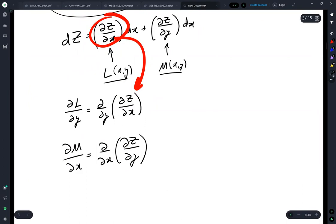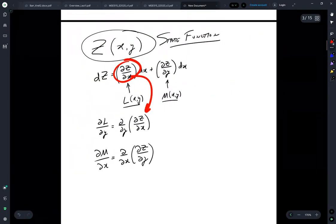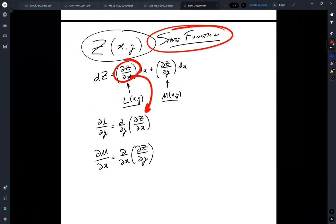Now, because this is a state function, that means that the order of operation, the path that you travel, does not influence the output.